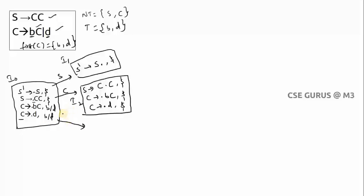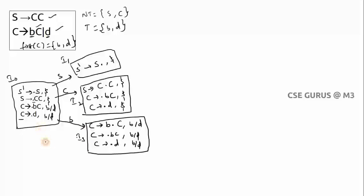From I0, scan b: C → b•C with lookahead b|d. Since •C is there, write C-productions: C → •bC and C → •d. Check: after dot-C in C → b•C, is there any symbol? No. So copy lookahead b|d to both. Then scan d from I0: C → d• with lookahead b|d. This is I3 (scanning b) and we'll track I4 (scanning d).